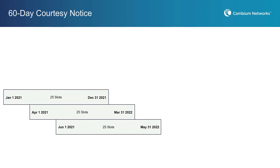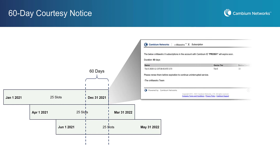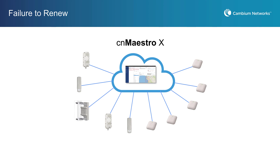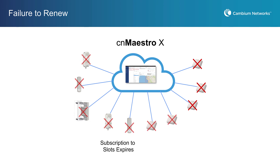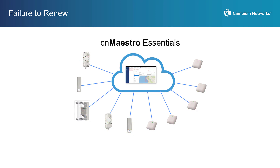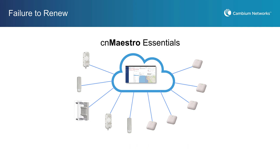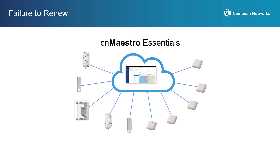At some point your subscriptions will approach their end date. You'll be sent an email 60 days prior to the end date as a courtesy notice to give you time to plan a renewal purchase. If you don't renew and allow subscriptions to lapse, the devices associated with the expired slots will become unmanaged. Any other devices linked to active slots will continue to be managed by CNMeisterOx. If all subscriptions in your account lapse, your account will revert to CNMeisterOx Essentials. When a subscription lapses, stored data will be retained but not accessible for 30 days. If you renew within 30 days, your data will be restored, though no new data will be collected during the lapse period.